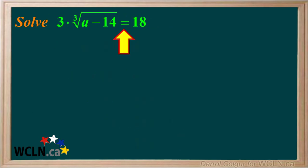We'll do one more example. This one involves a cube root radical. We're asked to solve the equation 3 times the cube root of a minus 14 equals 18.